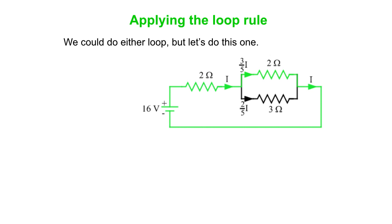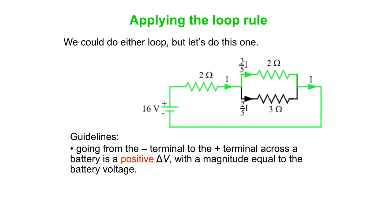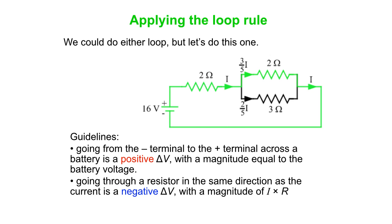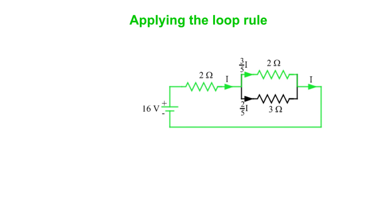So we're going to choose a loop, complete loop around the circuit, we could have gone through that 3 ohm resistor, but we didn't. We went through this one outlined in green. Some guidelines. When you go from the minus terminal to the positive terminal across a battery, then you get a positive delta V. Magnitude is equal to the battery voltage. If you go through a resistor in the same direction as the current, well, current flows downhill, so you get a negative delta V. Magnitude I times R. If you go the other way, then you flip the signs.